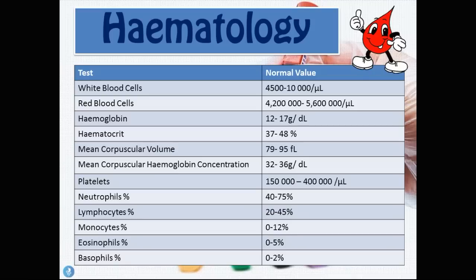First, we have the white blood cell count, which has a normal value of 4,500 to 10,000 per microliter. We have red blood cells at 4.2 million to 5.6 million per microliter, normal hemoglobin at 12 to 17 grams per deciliter, hematocrit at 37 to 48 percent, mean corpuscular volume at 79 to 95 femtoliters, mean corpuscular hemoglobin concentration at 32 to 36 grams per deciliter, and platelets at 150,000 to 400,000 per microliter.